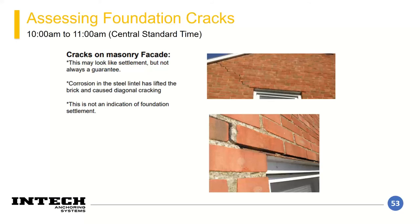Here are examples that people often mistake for settlement: neglected brick lintels with corrosion. Over time, the corrosion expands and can actually lift the brick, creating a pretty severe-looking crack. This type of crack is not an indication of settlement — it's something to watch for in the field, making sure cracking in the brick facade isn't stemming from a corroded brick lintel.